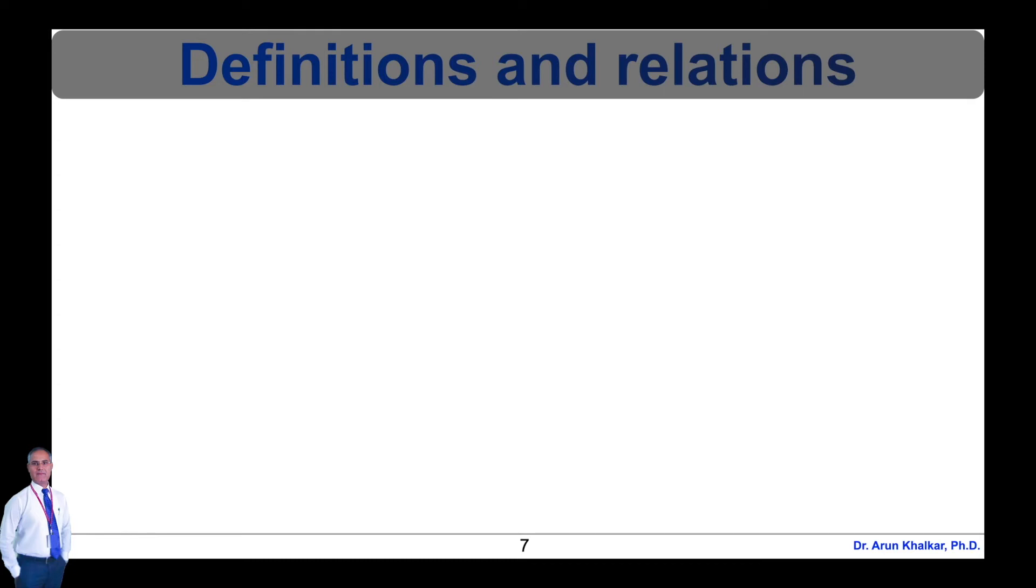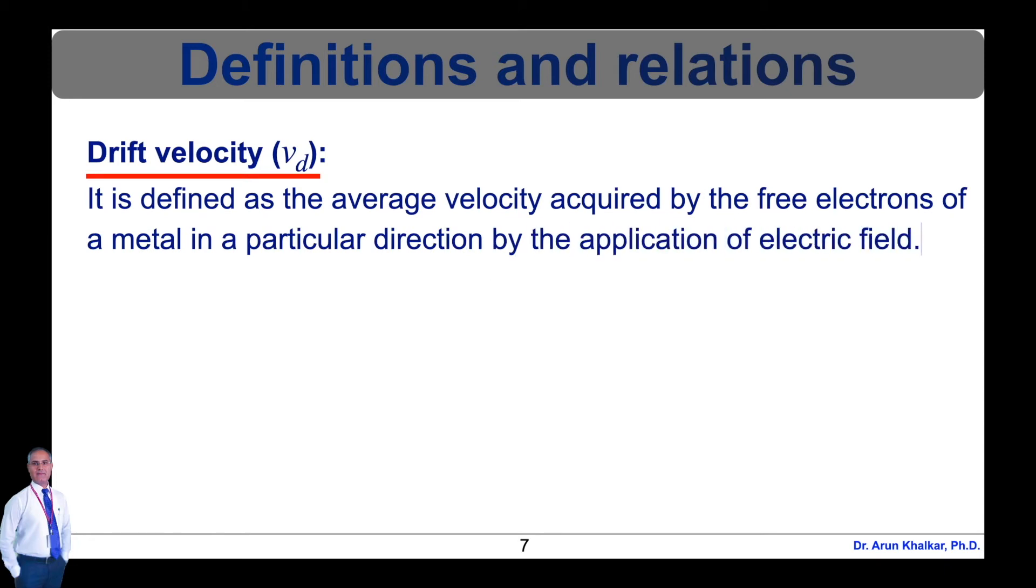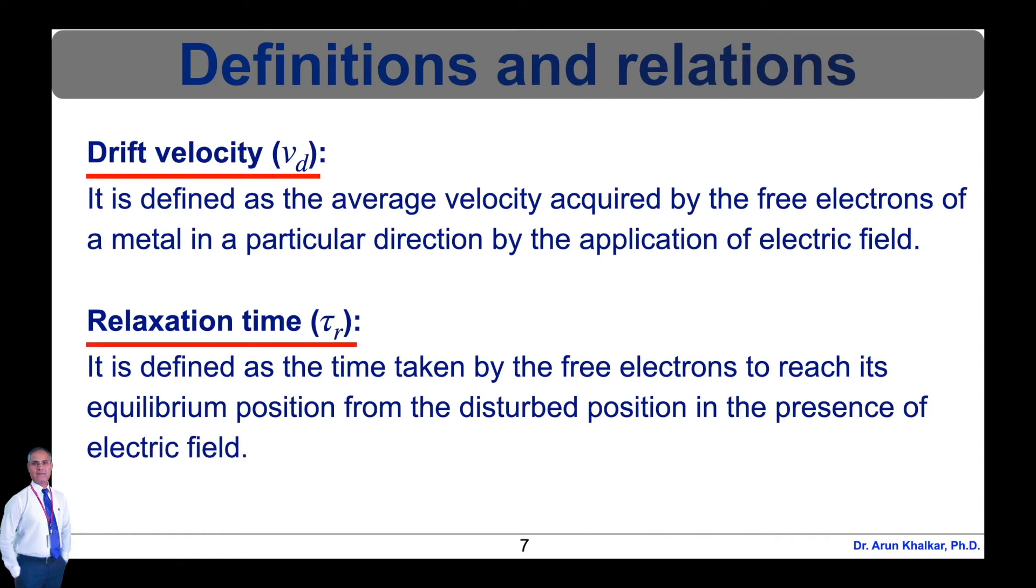Now let's see the definitions and some relations. First of all, drift velocity. The drift velocity is defined as the average velocity acquired by the free electrons of a metal in a particular direction by the application of electric field. Relaxation time is defined as the time taken by the free electrons to reach its equilibrium position from the disturbed position in the presence of electric field.